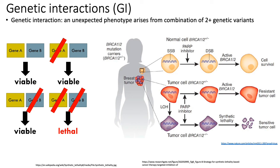If you inhibit PARP1 with a PARP1 inhibitor and you have a cancer cell with a BRCA1 mutation, those cancer cells will die because they have no way of repairing the many double-stranded DNA breaks that accumulate. On the other hand, normal cells in the same patient with functional BRCA1 genes can survive PARP1 inhibition because they still have BRCA1 to repair the DNA damage. So BRCA1 and PARP1 exhibit a synthetic lethal interaction, because inactivation of both leads to cell death, but inactivation of either one alone is not lethal.